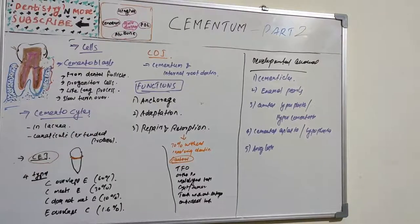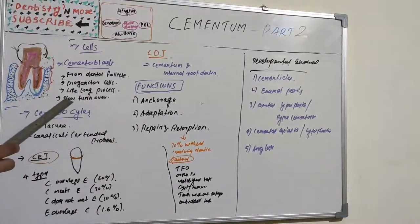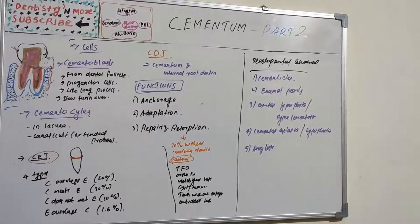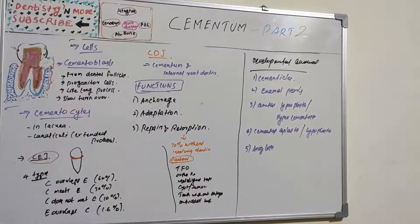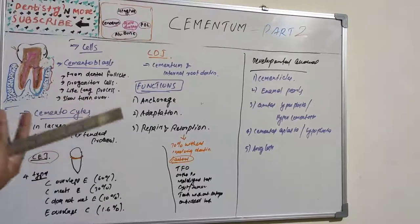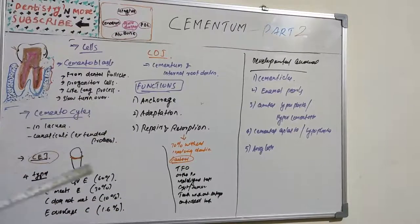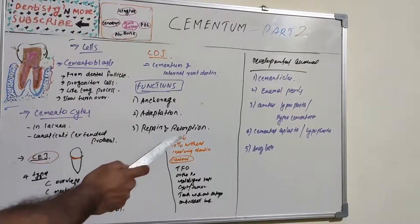For adaptation, continuous deposition of cementum is functionally important because cementum is not resorbed under normal conditions. As age increases, a new layer is deposited as the most superficial layer, keeping the attachment apparatus intact throughout life. For repair, cementum is a major reparative tissue for root surfaces — damaged roots from fractures or resorption can be repaired by the deposition of new cementum.